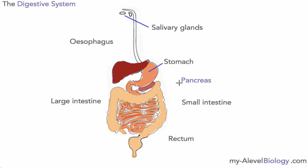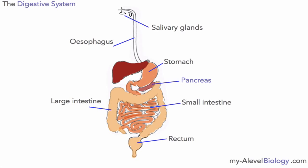The stomach is here, and the pancreas — now this is not actually specifically labelled on the spec for you to label, but I think you should be aware of it because we do talk about it in other parts of the topic of digestion. We've got the small intestine, that then leads to the large intestine which then finally leads to the rectum, which allows undigested food to pass out of the body. The esophagus is the food pipe that connects the mouth to the stomach. This is just a question of knowing the different parts — nothing difficult here, just spend a few minutes making sure you know those.